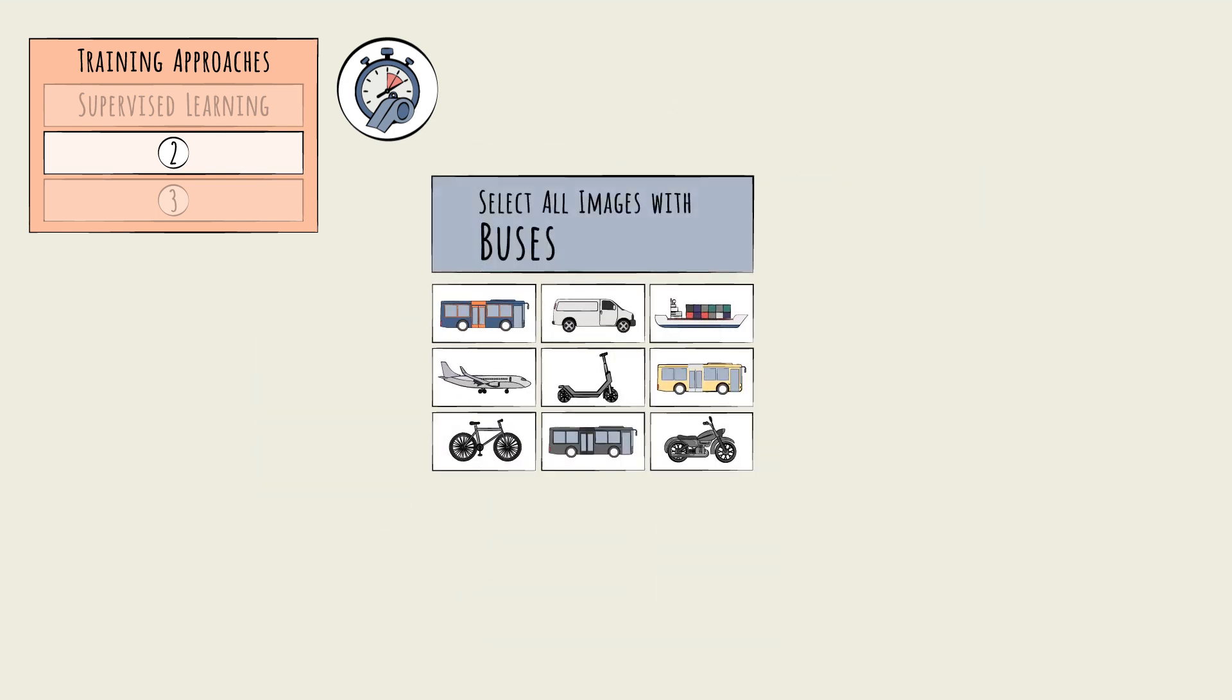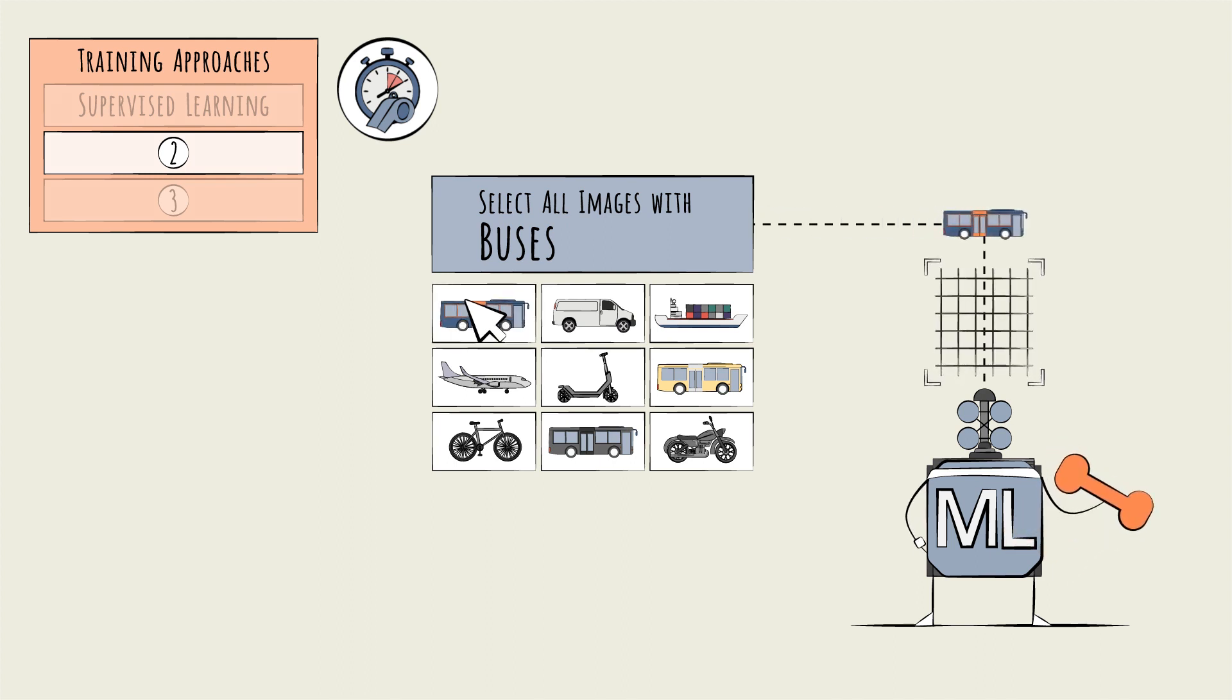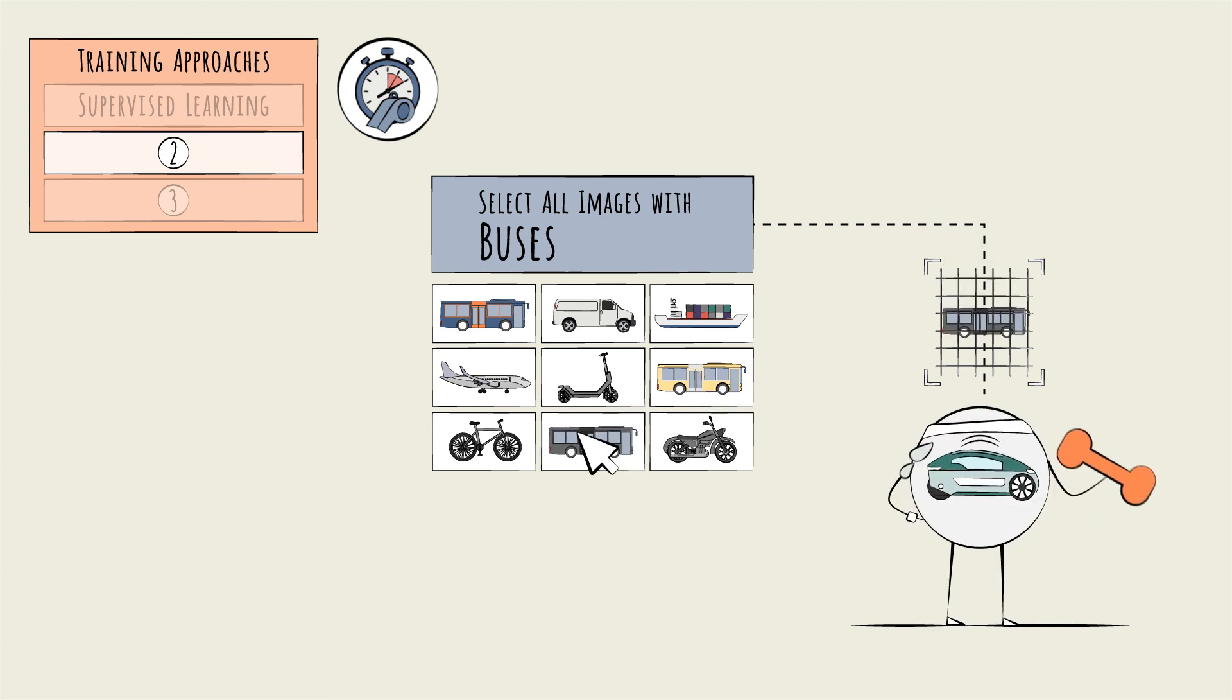Incidentally, this is exactly the manual process you're contributing to when you identify all the stoplights or buses while logging in. Your answers are helping label the images in a training dataset, which can then be used to train, via supervised learning, image recognition models, like those used by self-driving cars.